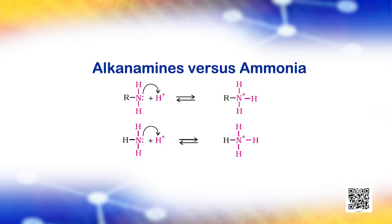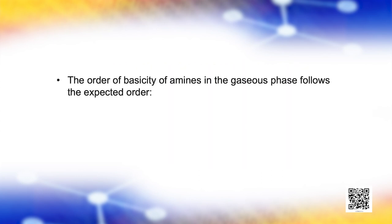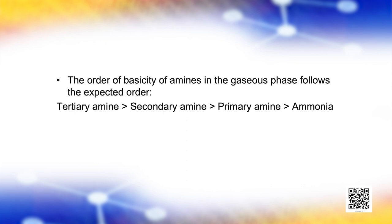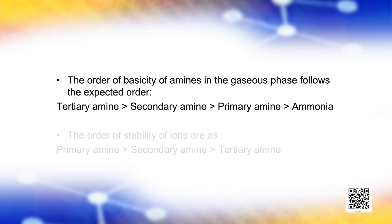Hence, alkyl amines are stronger bases than ammonia. The order of basicity of amines in the gaseous phase follows the expected order: tertiary amine > secondary amine > primary amine > ammonia. The trend is not regular in the aqueous state as evident by their pKb values. In the aqueous phase, the substituted ammonium cations get stabilized not only by the electron-releasing effect of the alkyl group, but also by solvation with water molecules. The greater the size of the ion, lesser will be the solvation and the less stabilized is the ion. The order of stability of ions is primary amine > secondary amine > tertiary amine, which is opposite to the inductive effect based order.